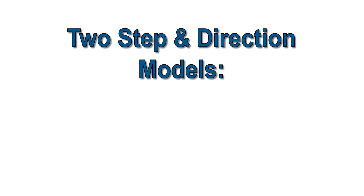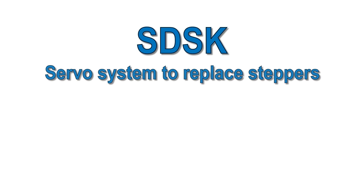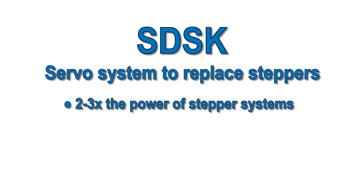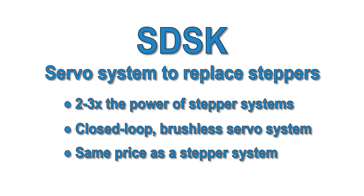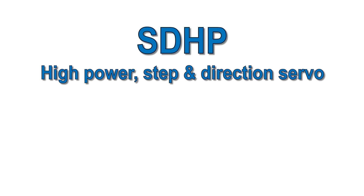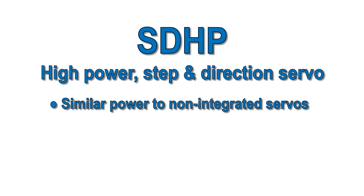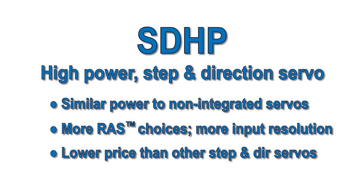There are two models within the ClearPath SD series: the SD-SK and the SD-HP. The SD-SK model is meant to be a drop-in replacement for stepper motors, with two to three times the power of a similar sized stepper, a closed loop brushless servo system that won't stall or lose steps, and costs about the same price as a stepper. The HP model has comparable power to a step-in direction servo motor without the bulk of a separate servo drive — over ten times the power of a similar sized stepper. The HP also has more RAS choices and more choices of input resolution. The HP is more expensive than the SK, but very favorably priced compared to other digital step-in direction servo systems.